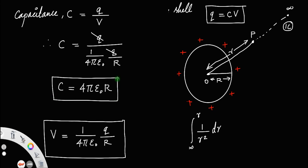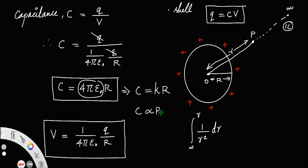This is the capacitance of a spherical capacitor or spherical shell. From this equation, all terms 4π epsilon-0 are constant, so C is equal to some constant times R, or C is proportional to R. Therefore, as the radius of the shell increases, its capacitance also increases.